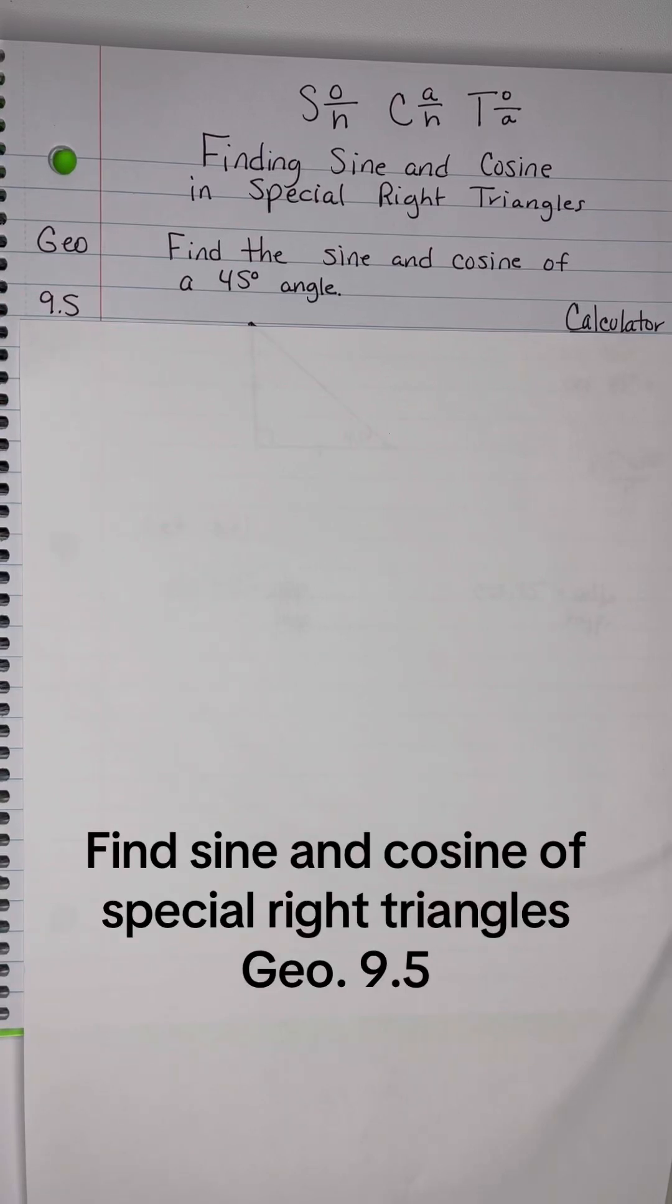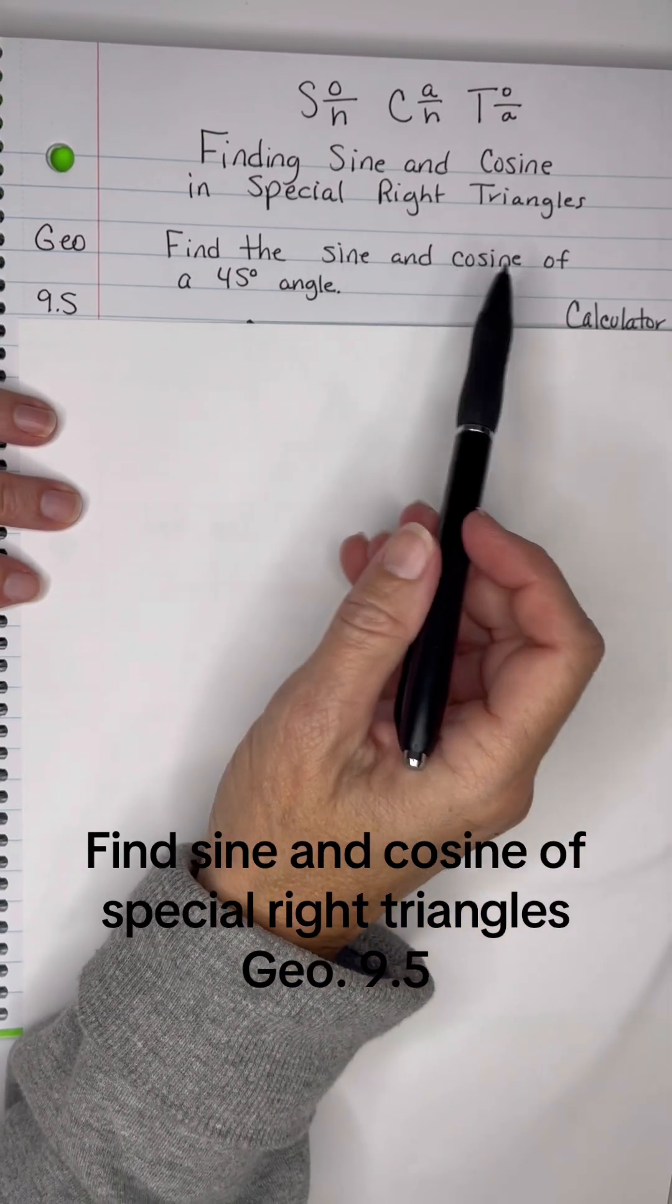Okay, let's find the sine and cosine in special right triangles. Remember the 45-45-90 triangle that we studied earlier? We're going to find the sine and cosine of those.